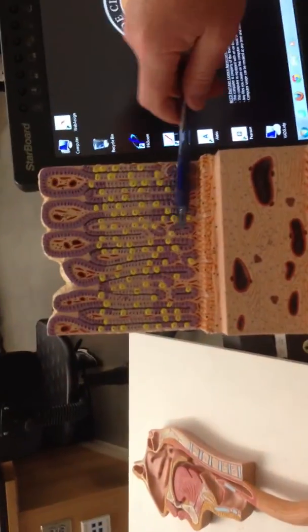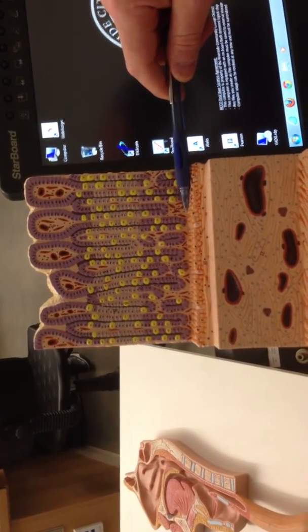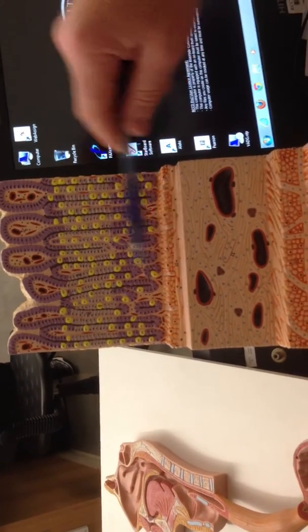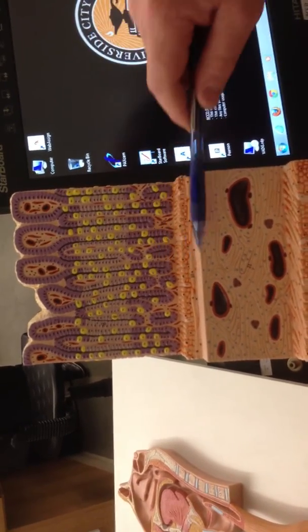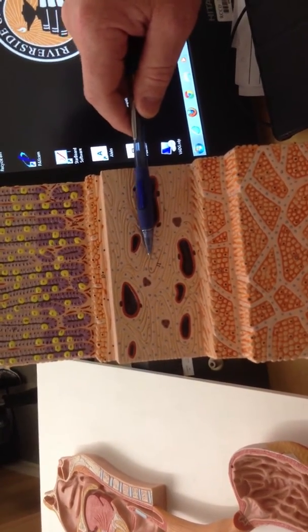This is the mucosa, this is the muscularis mucosa, the reinforcement of that structure. And so this from here out is the mucosa lining. Here's the submucosa, the submucosa.